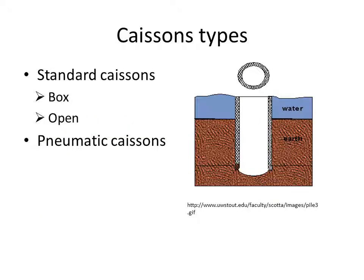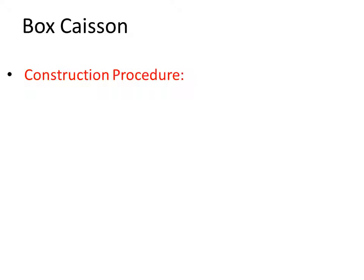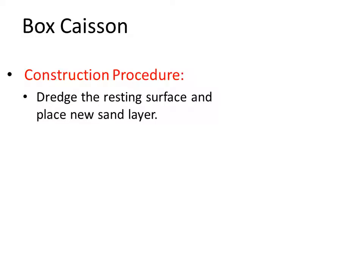We have three main types of large caissons: box caissons, open caissons, and pneumatic caissons. The first two are categorized as standard caissons, while the pneumatic caisson is an unconventional type. We'll start with the box caisson, which is the simplest of the three.